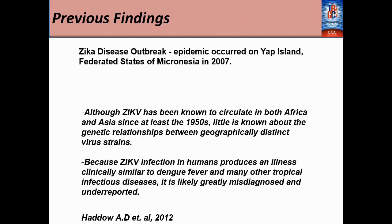Previous findings: the Zika virus outbreak epidemic occurred on Yap Island, Federated States of Micronesia, in 2007. Although the virus has been known to circulate in both Africa and Asia since at least the 1950s, little is known about the relationships between geographically distinct virus strains. Because the infection in humans produces an illness clinically similar to dengue fever and many other tropical infections, it is likely greatly misdiagnosed and underreported.